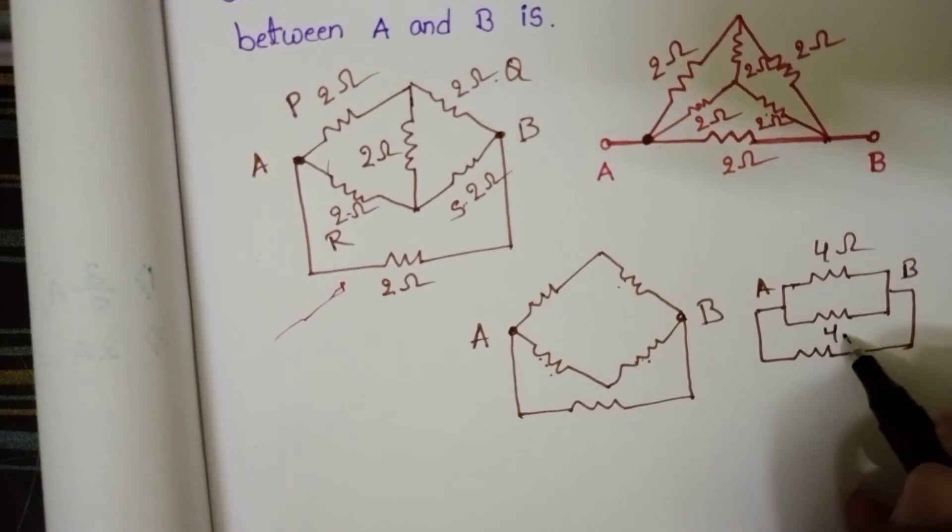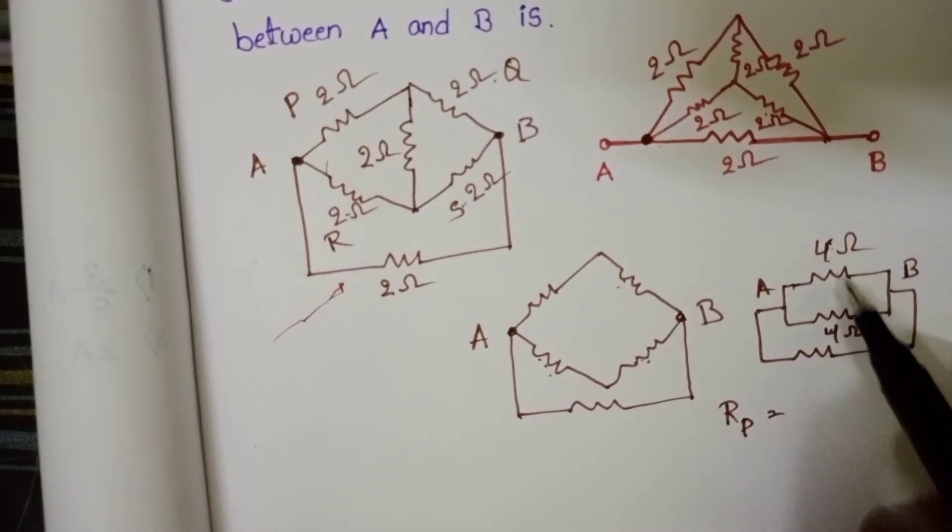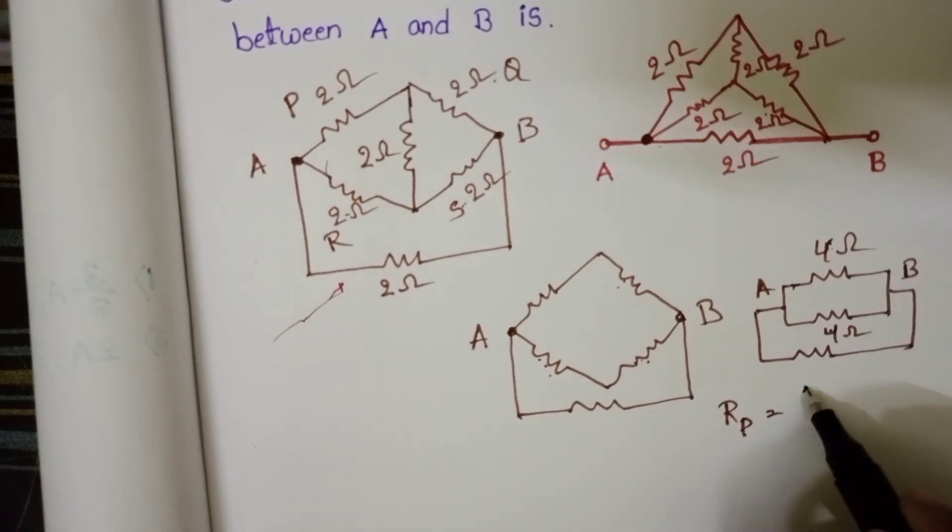Now these 2 resistors 4 ohm and 4 ohm, these 2 are in parallel. Then the resistance of each resistor is same, only R by N. 2 resistors, so 4 by 2 equals 2 ohm.